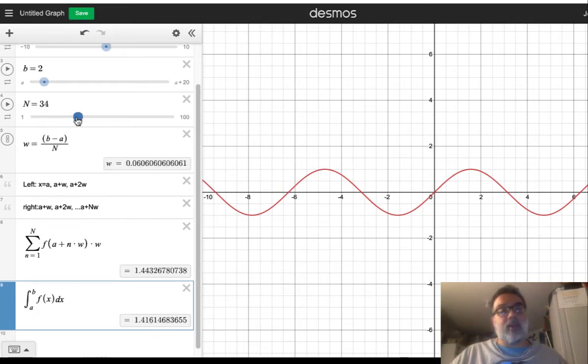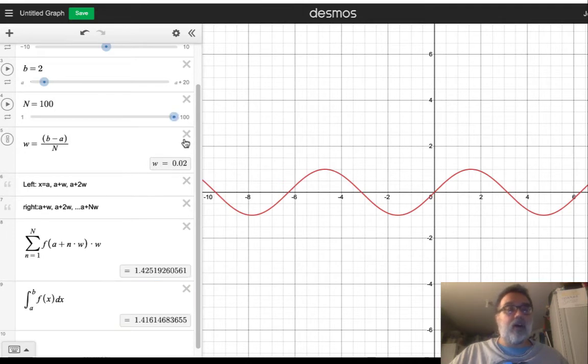And if we increase the number of n, we can see it's getting smaller, getting closer to our value. With 100, we're still a tenth away from what we'd want. So it's not a super accurate approximation. It's pretty close.